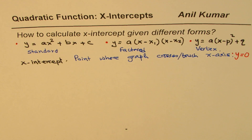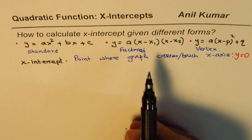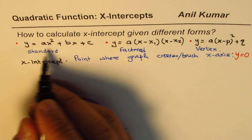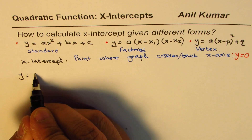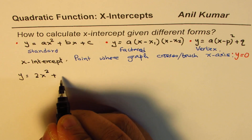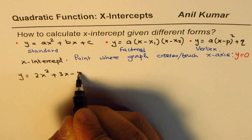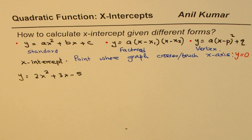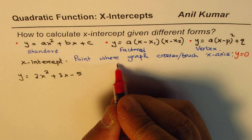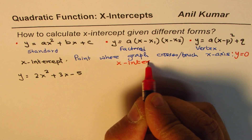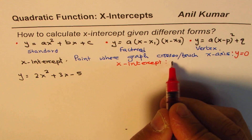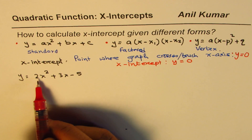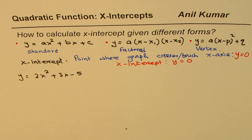Now let me take a concrete example. Let's take y equals 2x squared plus 3x minus 5. As you can see, this is in standard form. To find the x-intercept, we substitute y equals 0 into this equation and then solve for x.